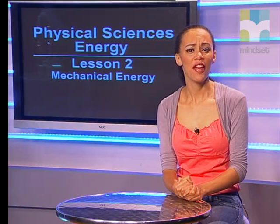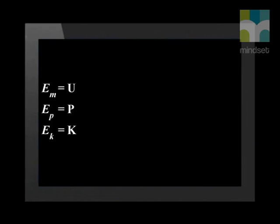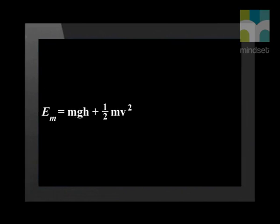In some textbooks, the author uses the symbol U for mechanical energy, P for gravitational energy, and K for kinetic energy. You should be aware of this, but we will not use this notation. When we substitute the formulae for kinetic energy and gravitational potential energy, we get: total mechanical energy equals the product of mass, gravitational acceleration, and height, plus the product of half the mass and the square of the velocity.